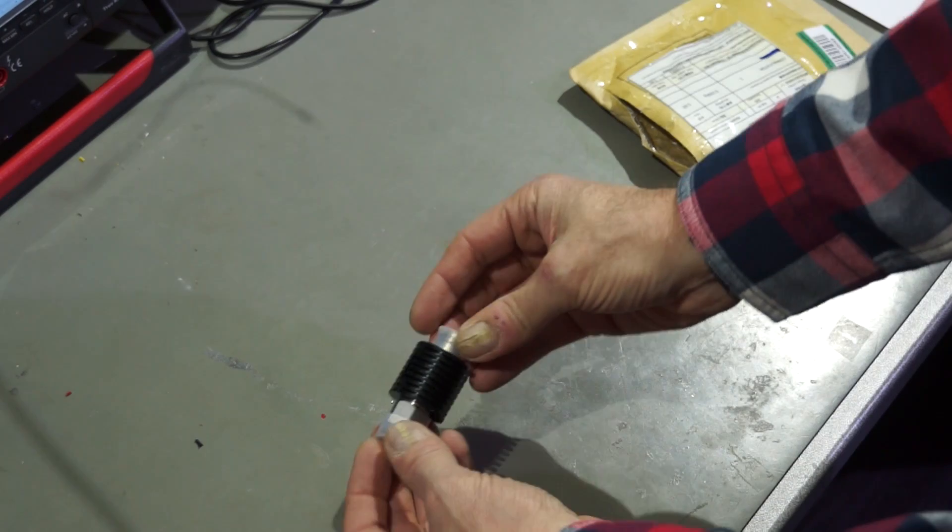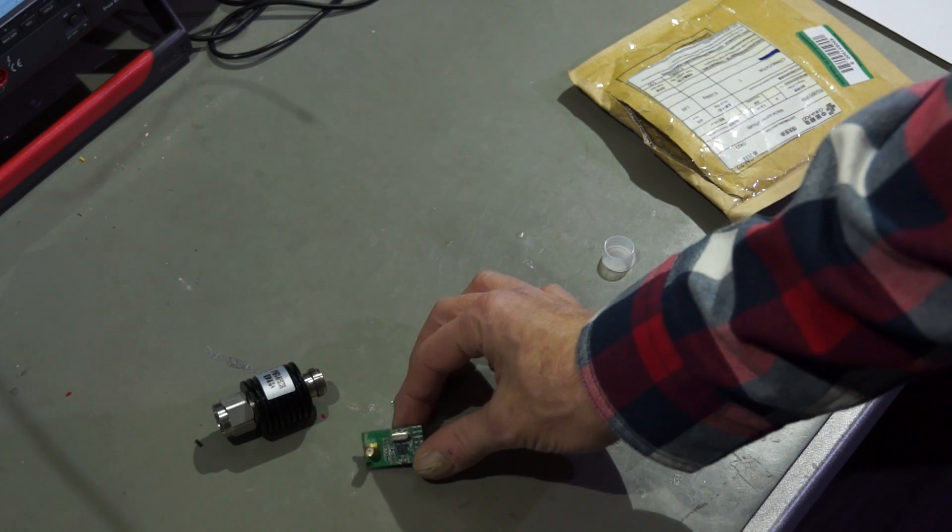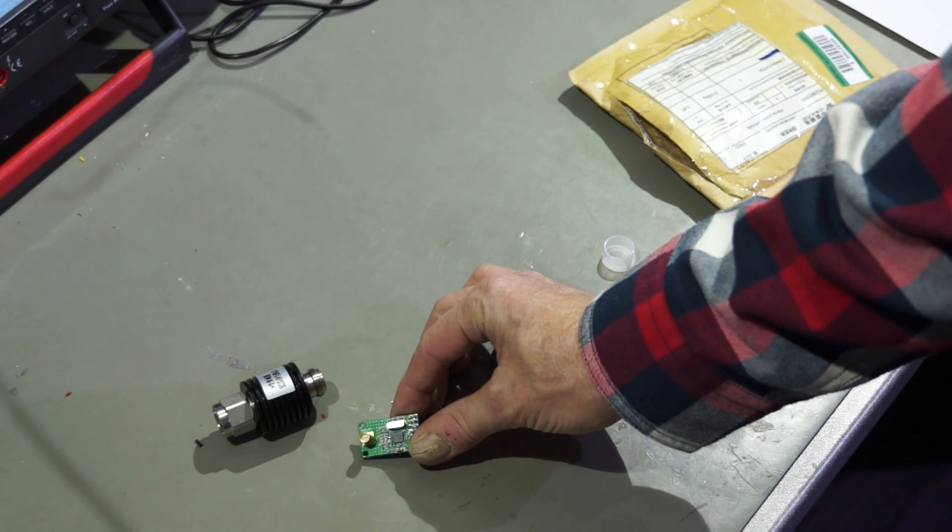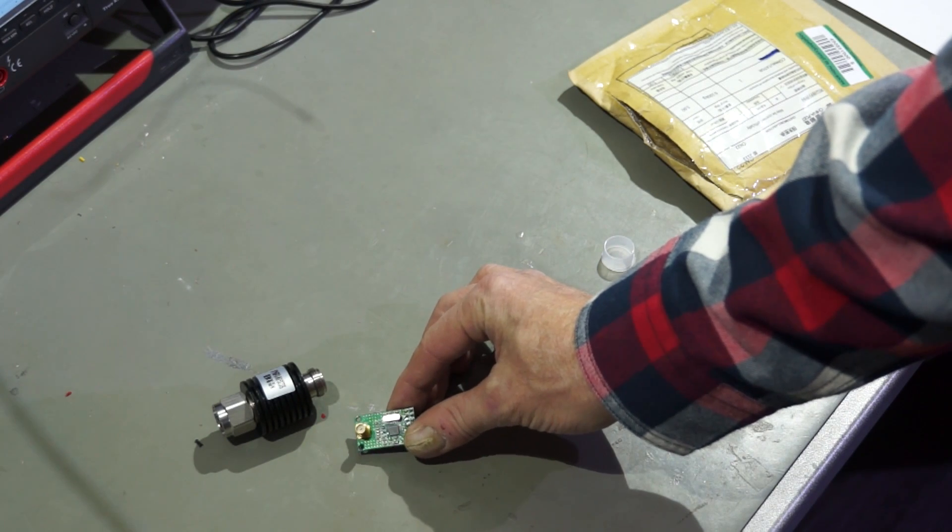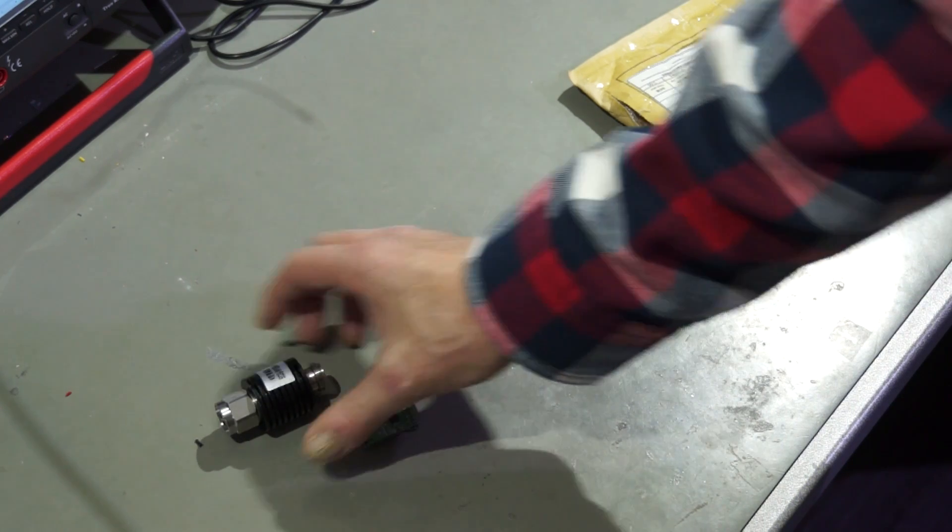This is an attenuator. It attenuates signals coming from a source like for example the NRF 905 modules which I tested last time and it will protect my spectrum analyzer.